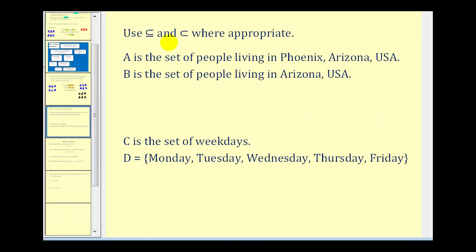Let's take a look at two more examples. We want to use either the subset symbol or the proper subset symbol when appropriate given these two situations. So set A is a set of people living in Phoenix, Arizona, USA. And set B is the set of people living in Arizona. And since Phoenix, Arizona is in the state of Arizona, we could say that A is a subset of B. And since set A does not equal set B, we can say that A is also a proper subset of B.